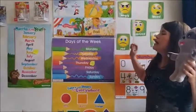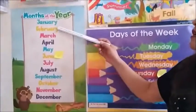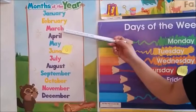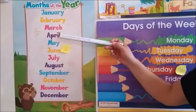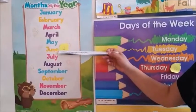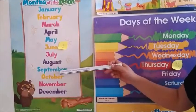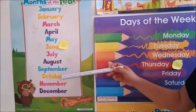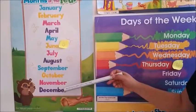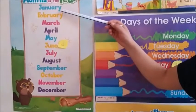Now let's review months of the year. January, February, March, April, May, June, July, August, September, October, November, December. Are we on January?